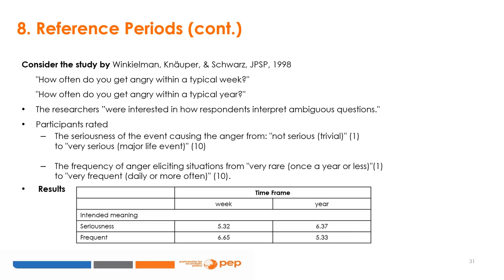A study examined how respondents interpret ambiguous questions about anger frequency, asking: 'How often do you get angry within a typical week?' and 'How often do you get angry within a typical year?' Anger frequency was rated 1 (very rare, once a year or less) to 10 (very often, daily or more). Results showed the degree of anger within a week averaged 5.32, but 6.37 for yearly instances. However, frequency was higher for the weekly question (6.65) than the yearly question (5.33).